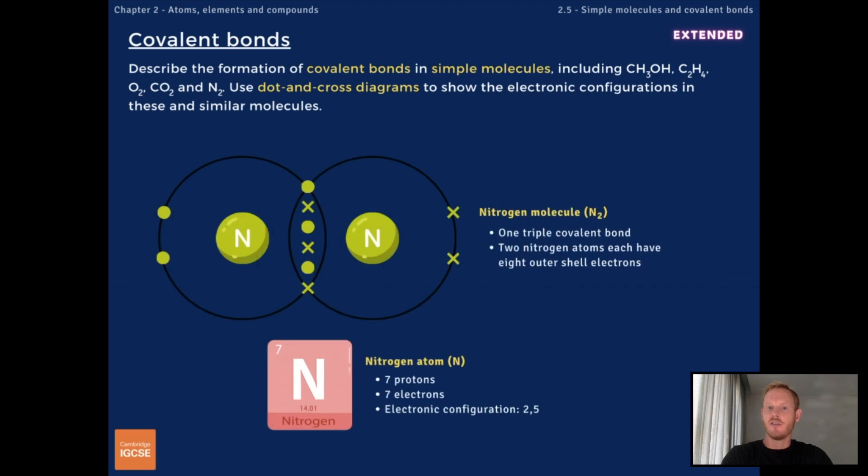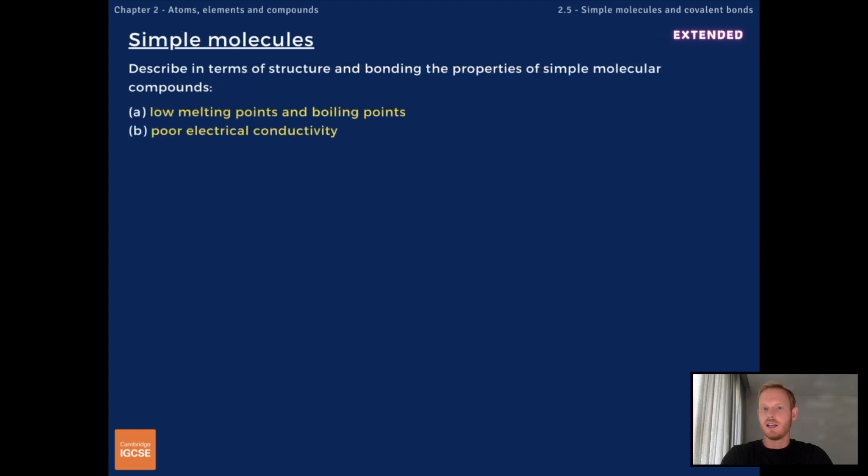Finally, nitrogen has five outer shell electrons and therefore needs three more. To achieve a noble gas electronic configuration, two nitrogen atoms share three pairs of electrons, forming a triple covalent bond. Finally, you need to explain the properties of simple molecular compounds in a little more detail.